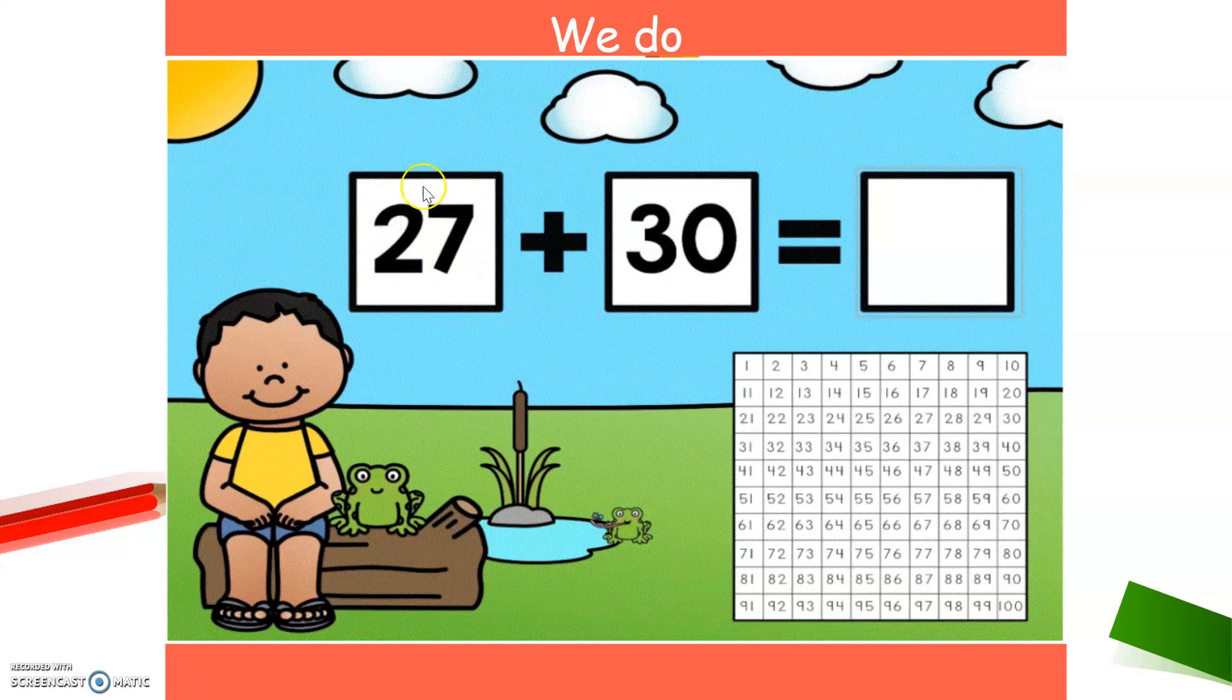We always start with the number that has more than zero ones because it's easier to count your jumps down when you have no ones. When you only had to count the tens. That's why you leave the multiple of 10 to count your jumps. So look with me for 27 in the number chart. There it is. Very good.